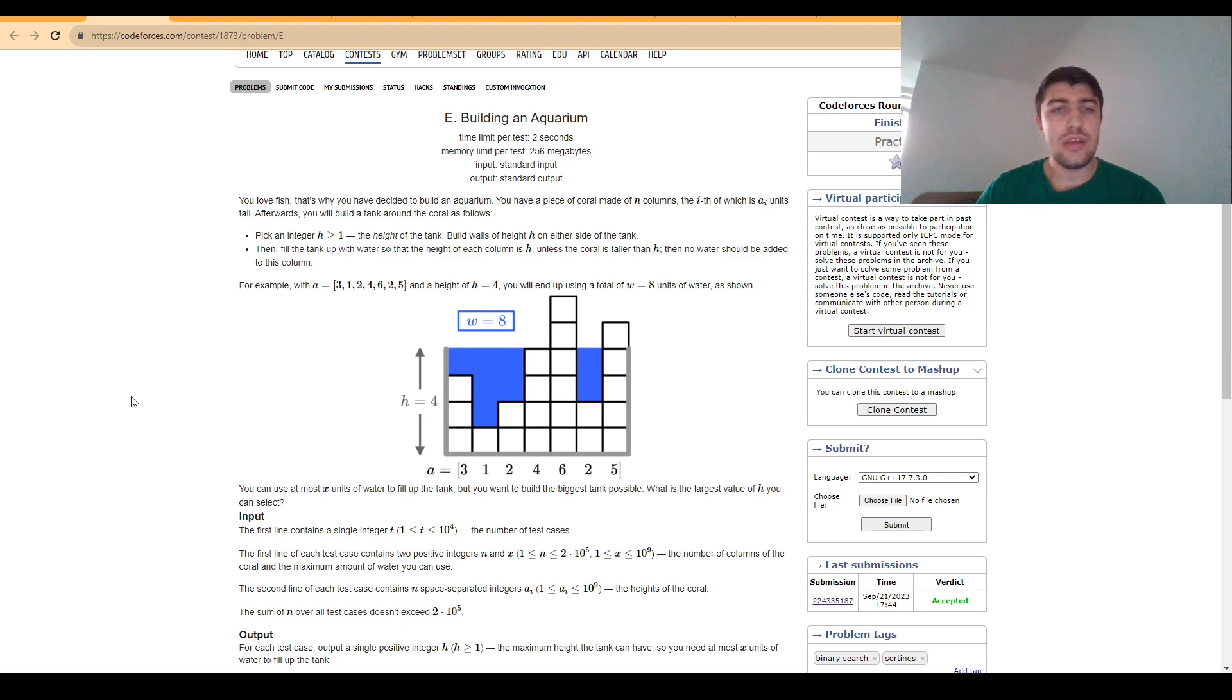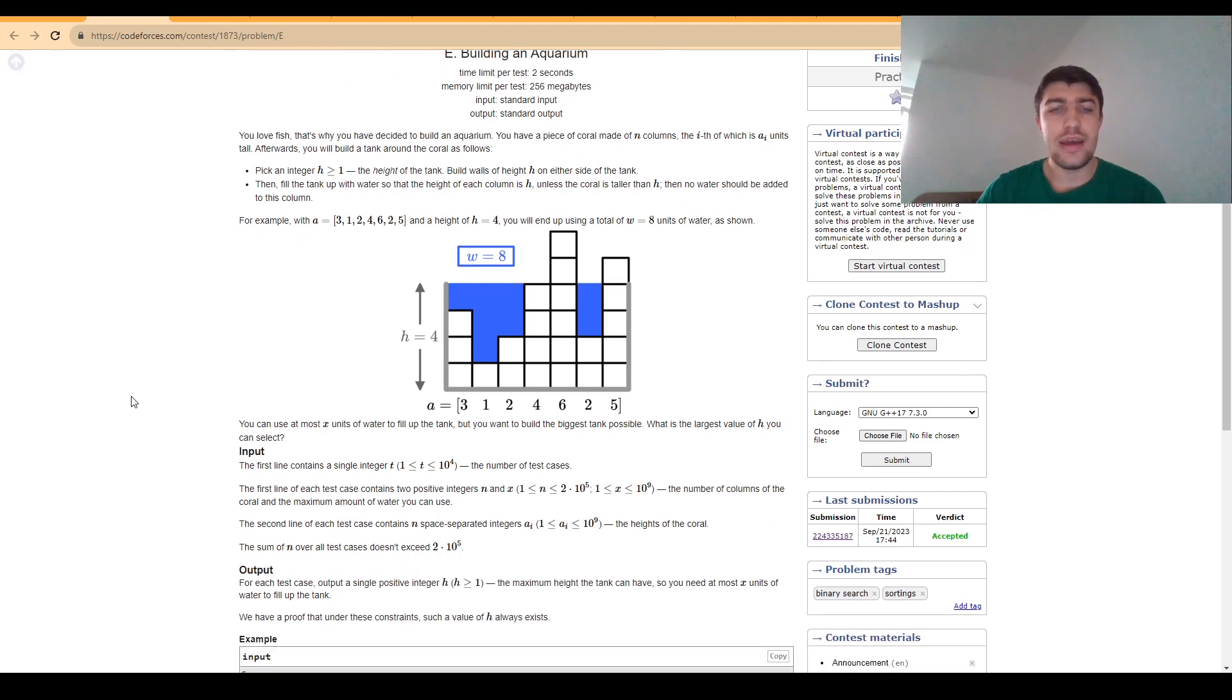When it comes to problem E, we have an array of length n and a value x. In this problem we know the height of each position and we also know how much water we have at our disposal.